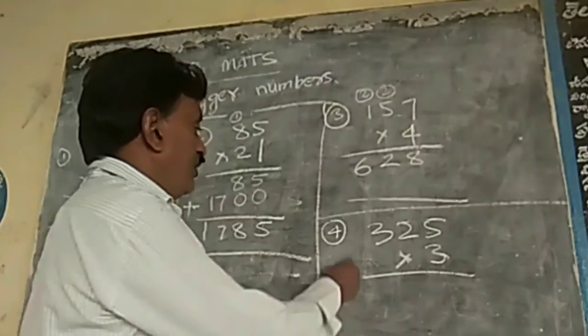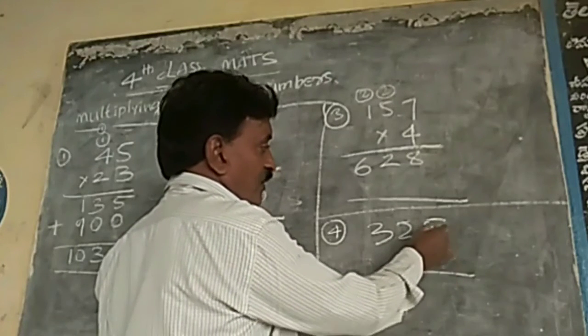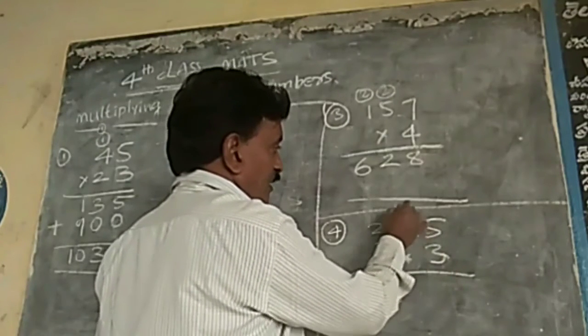Next. 4th one. 325. This is the big number. Multiplied by 3. 3, 5, yeah. 15. Right. 1 here.